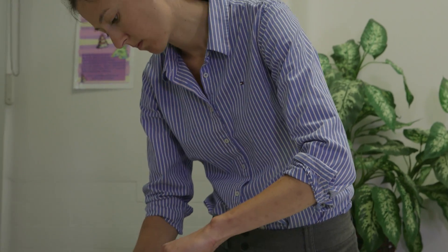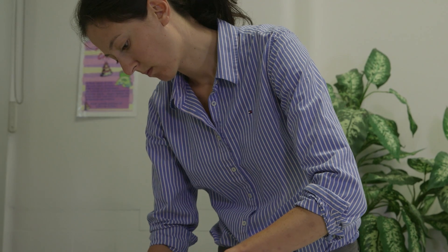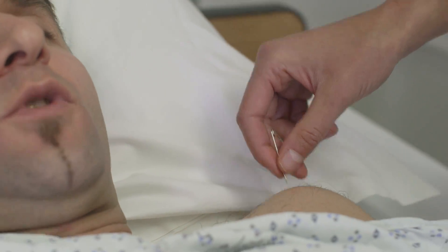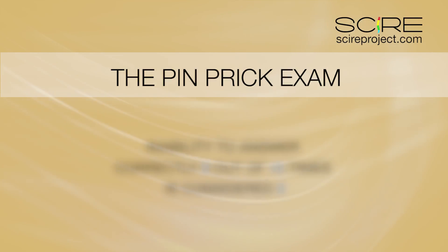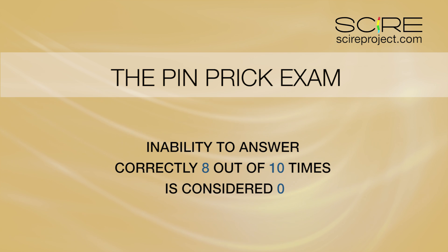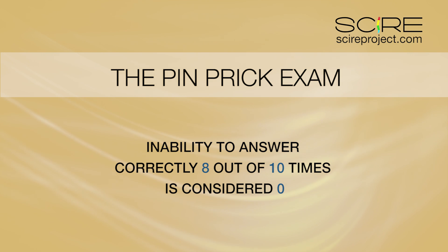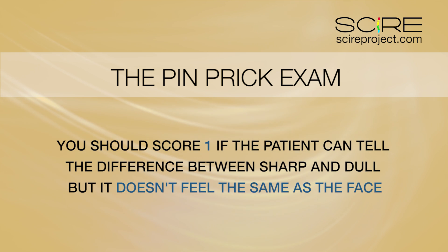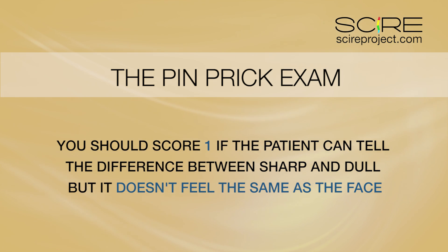An inability to determine the difference between sharp and dull is scored as a zero. If you are unsure, try the same point ten times — an inability of the patient to answer correctly eight out of ten times is also considered a zero. You should record a score of one if the patient can tell the difference between sharp and dull, but it doesn't feel the same as it did on their face.